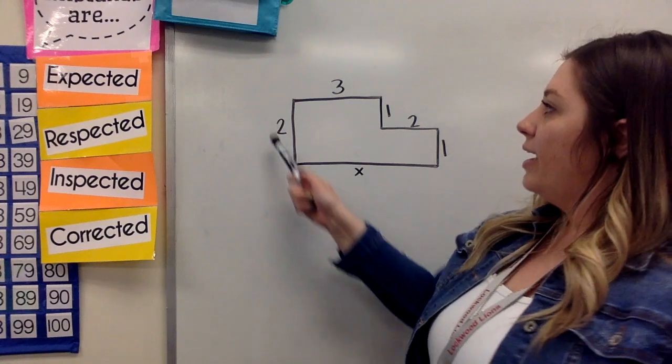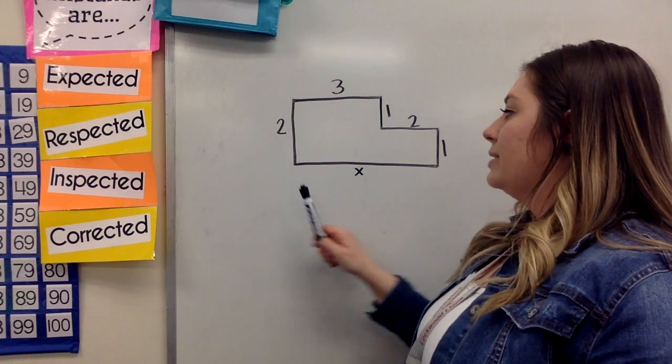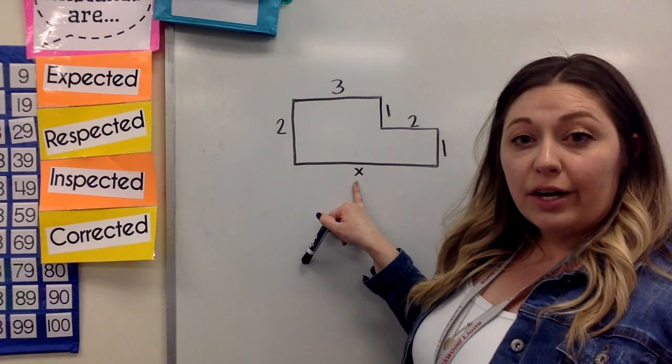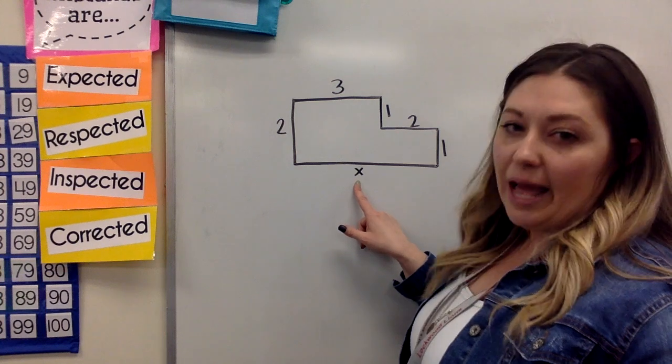So when I come to a figure and I see that almost all the sides are shown, but there's one missing, a lot of times when we're looking at this, it's going to have some kind of a letter showing that it's an unknown length. So in this case, it's going to be an X.